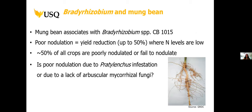Mungbean is a nitrogen fixing legume. It associates with Bradyrhizobium, and the commercial isolate used to inoculate mungbean in the field is CB1015. Surveys done in 2005 found that poor nodulation resulted in yield reductions of up to 50%, especially where nitrate levels in the soil were already low, and about 50% of mungbean crops surveyed were poorly nodulated or had total nodulation failure. Our hypothesis was that poor nodulation could be due to a Pradylenchus thornei infestation or a lack of arbuscular mycorrhizal fungi inoculum in the soil.